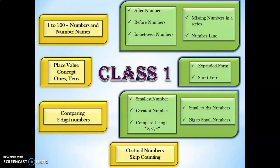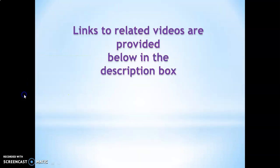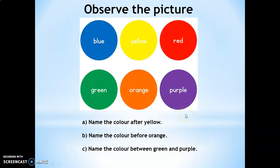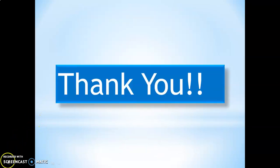With that we finish the topic of 1 to 100 numbers and number names under the concept of numbers for Class 1. Each of these topics is covered in separate videos and the links are provided in the description box below. If you like the content, click the subscribe button and the bell button for regular updates. Let us finish the session with a quick question: observe the picture and answer — name the color after yellow, name the color before orange, name the color between green and purple. Leave your answers in the comment section. See you in my next video, thank you!